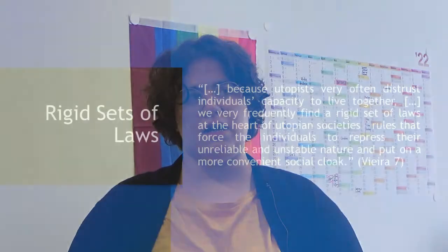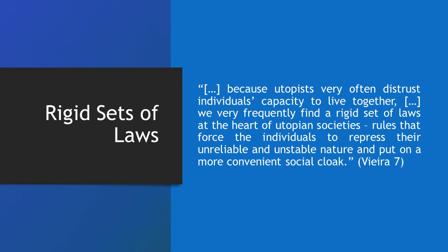Interestingly, Vieira brings up the high number of rules that often accompany utopian societies. Because utopists very often distrust individuals' capacity to live together, we very frequently find a rigid set of laws at the heart of utopian societies — rules that force individuals to repress their unreliable and unstable nature and put on a more convenient social cloak. Considering this rigid set of laws, it is perhaps not a surprise that dystopia is inherently already present within utopia. After all, the oppressive government is one of the most frequent staples in dystopian fiction, and it seems only intent and effect that distinguishes its actions from that of a utopian government.